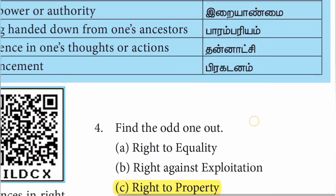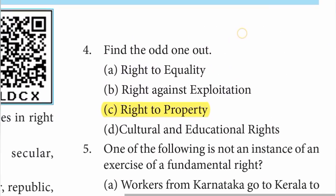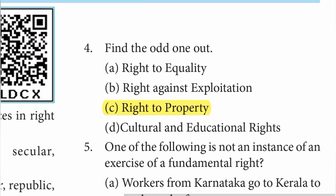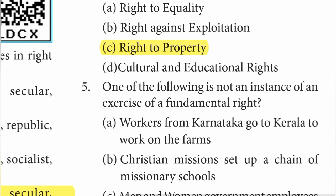Fourth: find the odd one out — right to equality, right against exploitation, cultural and educational rights, right to property. The answer is C option — right to property is the odd one.